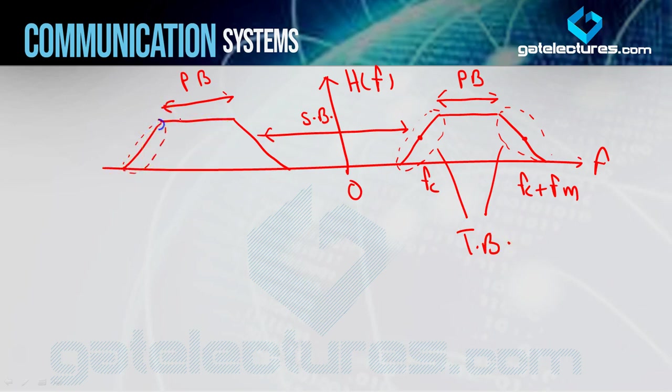Toh jo aapka ideal filter hota hai, usme sirf do tarah ke band hote hain: stop band and pass band. Lekin jo aapka practical filter hota hai, usme aapke 3 types ke band hote hain: stop band, pass band, and transition band.